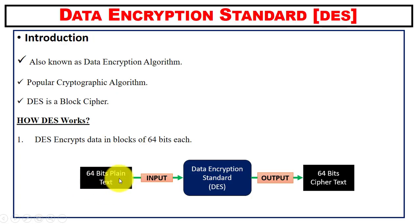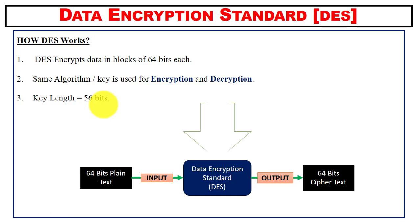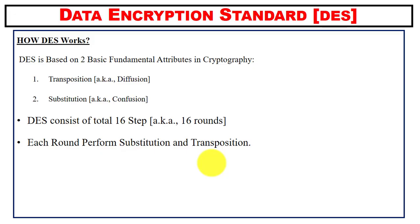In this video we will learn how this algorithm converts 64-bit plain text into 64-bit ciphertext. For both encryption and decryption, we use the same key, and the key length is 56 bits. This algorithm is based on two fundamental attributes: transposition and substitution.